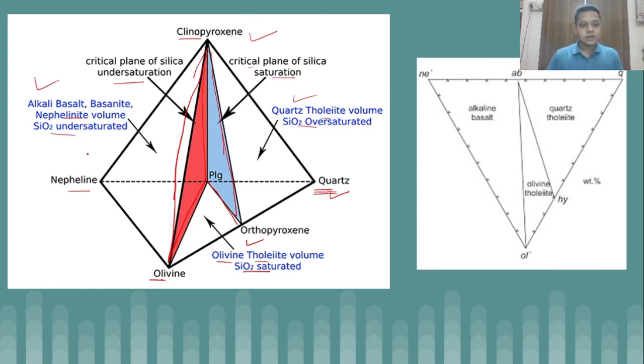Those are alkali basalt, basanites, nephelinites, or the silica under-saturated regions. We are calling them silica under-saturated because we know nepheline does not occur naturally with quartz. You will never find nepheline occurring with quartz, or in very negligible quantity, so hence these are more alkaline in content.